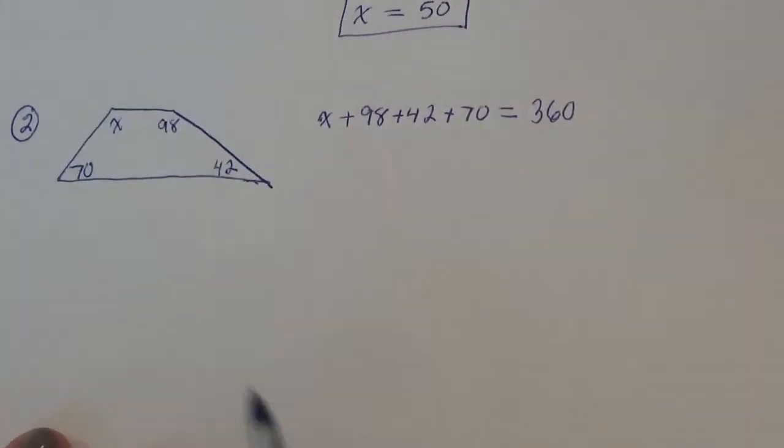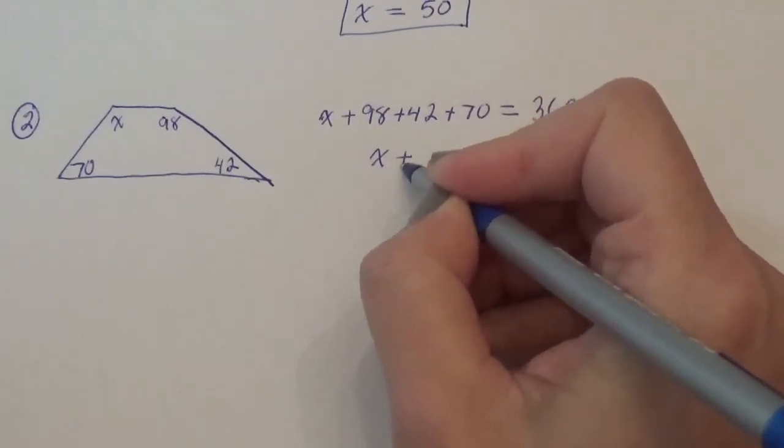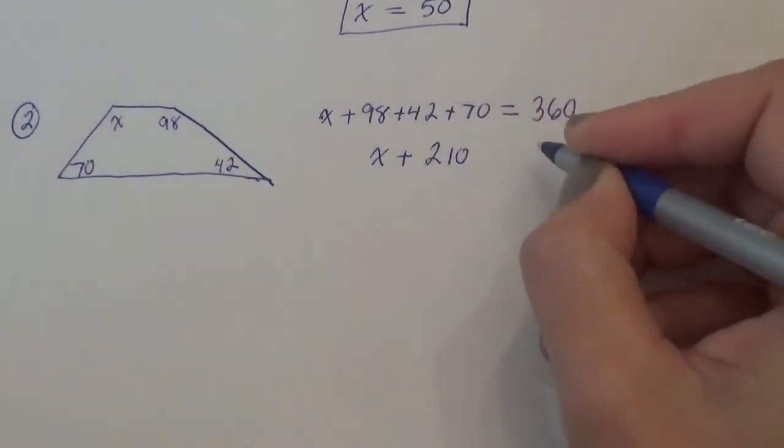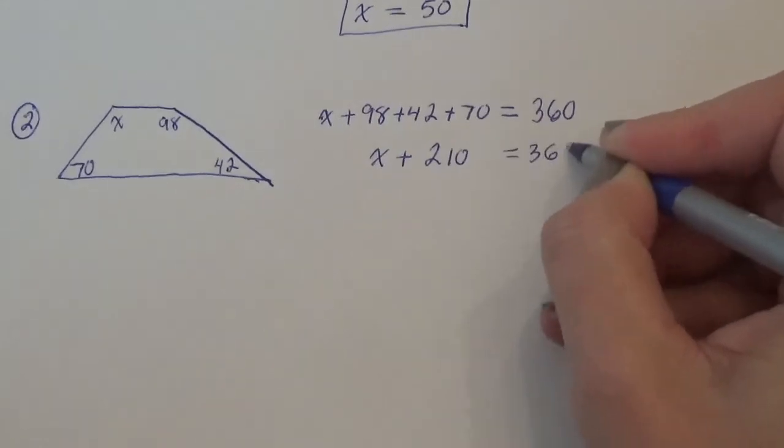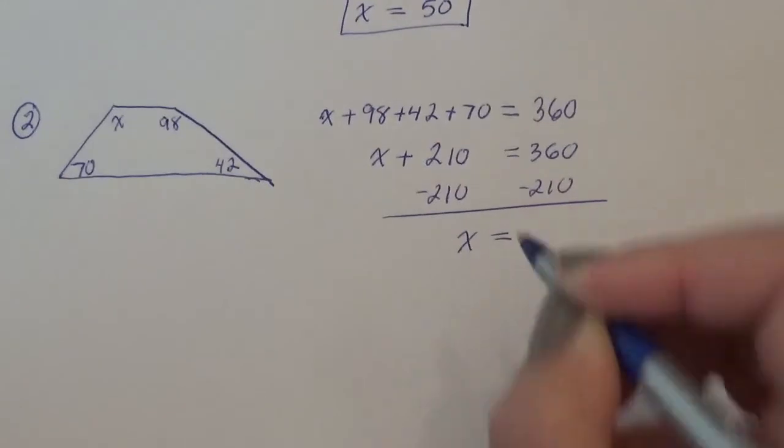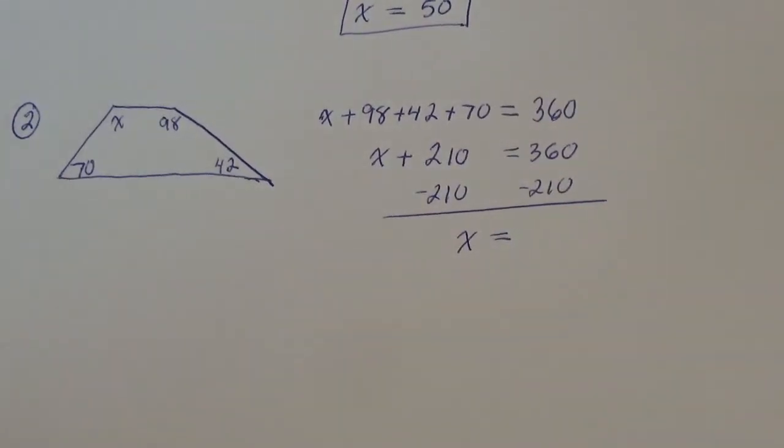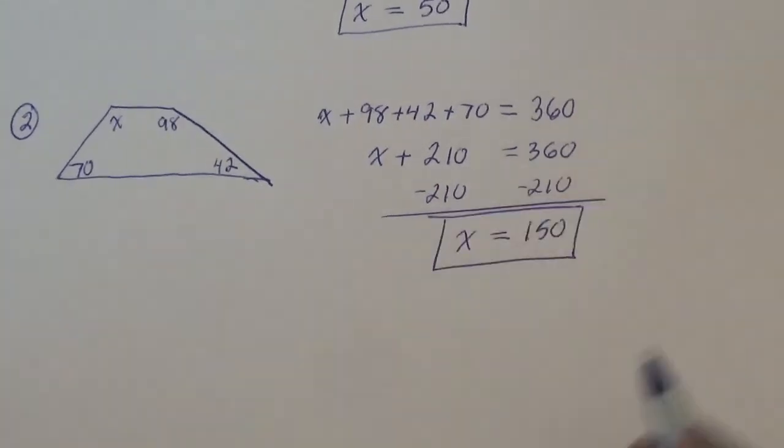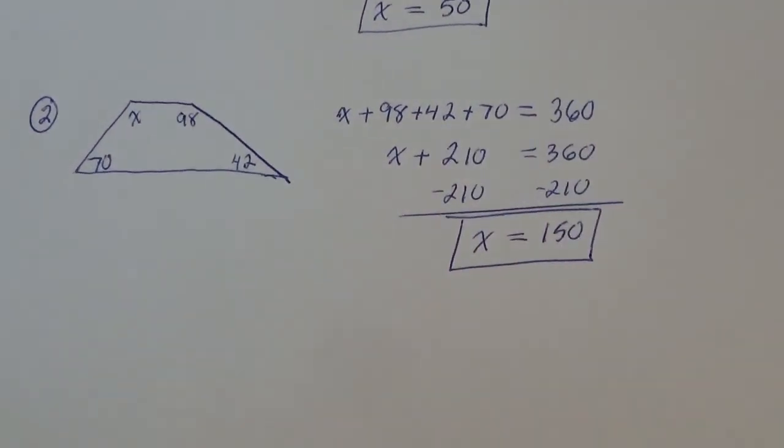Triangle, 180. Four sides, 360. Okay. And let's add this up. The 98. I'm going to use my calculator so I don't make a mistake again. 98 plus the 42 plus the 70 brings us to 210. And we're going to subtract that 210. And subtract. And we get 150. And again, we're done because in this case they just wanted x.